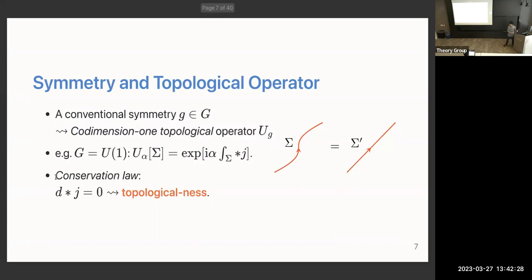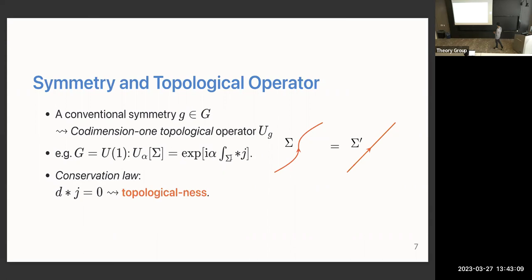The recent development of generalized symmetry is based on the close relationship between symmetry and topological operators. For conventional symmetry group G and its element g, there is a corresponding codimension-one topological operator. For example when G is U(1), we build such an operator by integrating the current over a codimension-one surface. The significant property of this operator is that it's topological — the correlation function does not depend on the shape of this surface, which comes from the conservation law or divergence-lessness of the current.